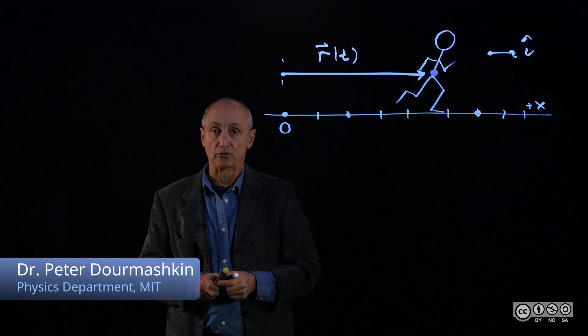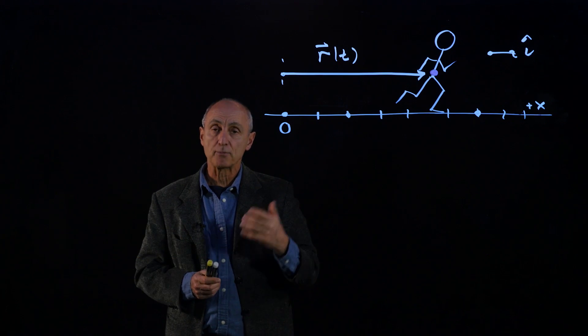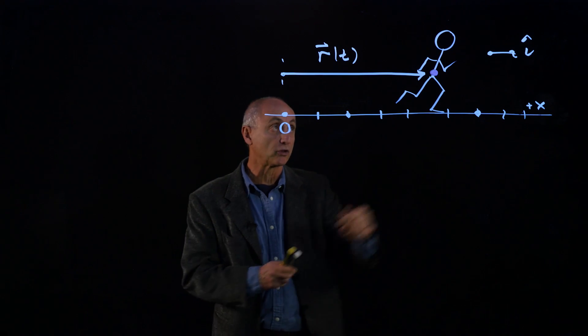Now that we've described the position vector of the runner, let's try to describe what happens in time as the runner moves along our road.